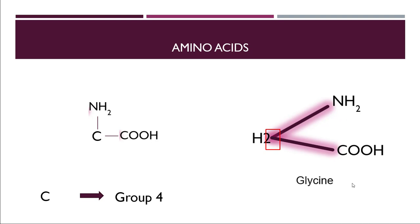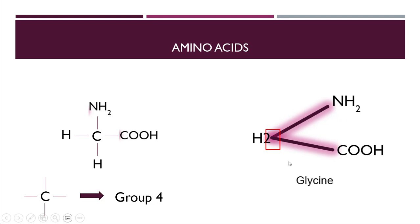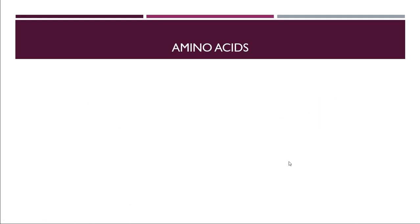Carbon needs to be stabilized with four different bonds, so how many hydrogens does it need? Two hydrogens — that's why H2 is here. This is the official structure for glycine. You need to put this structure in the exam, not the memorization shortcut. That shortcut is only for you to remember the structure.